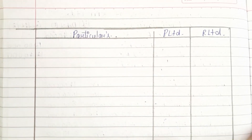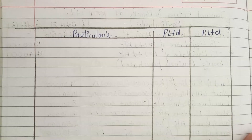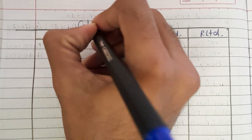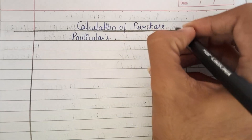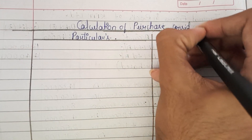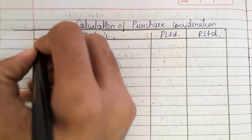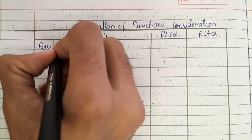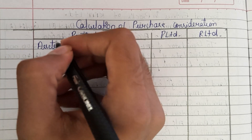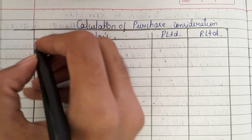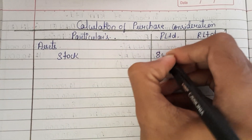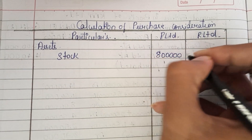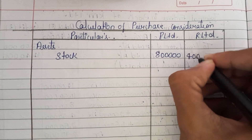First, we need to calculate the purchase consideration. Take all the assets. The first asset is stock — for P Limited it is Rs. 8,00,000, and for R Limited it is Rs. 4,00,000.